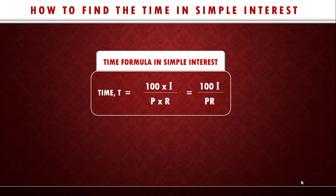For time, so time is given to be T equals 100 times I over P times R, or you can say 100 I over PR. So let's see an example on this.